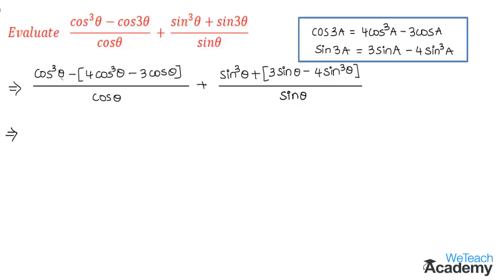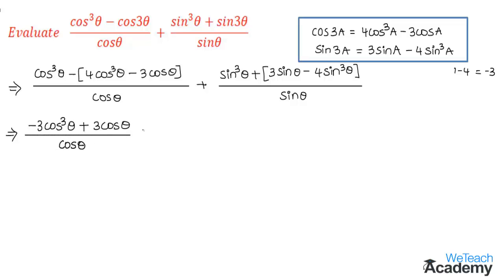We have cos³θ minus 4cos³θ. Distributing the negative sign, cos³θ minus cos³θ cancels, leaving plus 3cos θ divided by cos θ. For the sin terms, sin³θ minus 4sin³θ gives minus 3sin³θ, and we have plus 3sin θ.